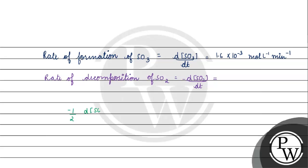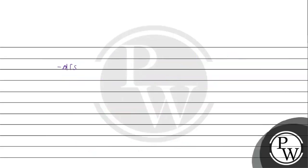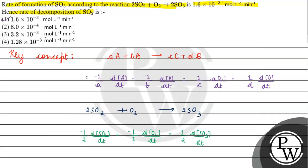The rate of decomposition of SO₂: minus 1/2 × d[SO₂]/dt = 1/2 × d[SO₃]/dt. So the rate of decomposition of SO₂ = 2 × (1/2) × rate of formation of SO₃ = 1.6×10⁻³ mol/L/min. Coming back to the question, the correct answer is Option 1. I hope you understood it well. Thank you and all the best.